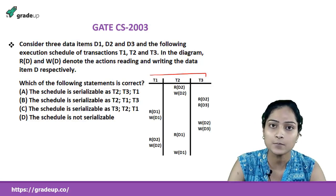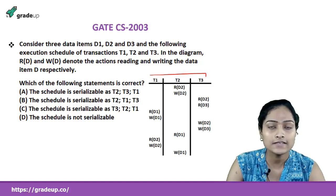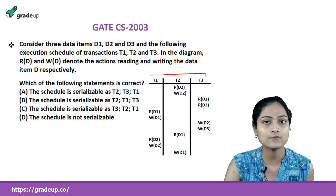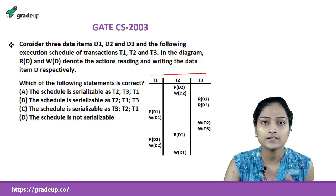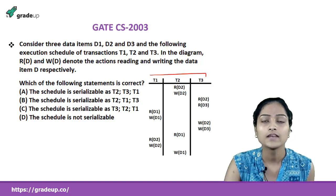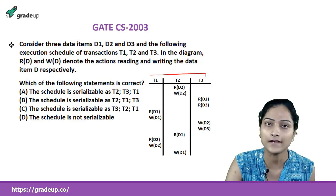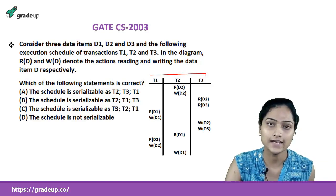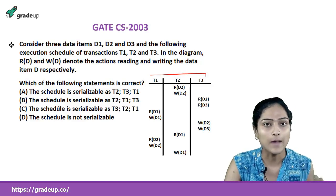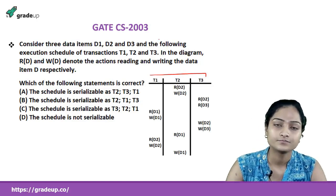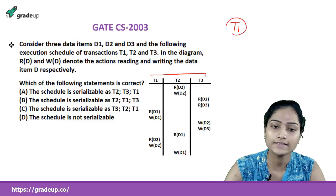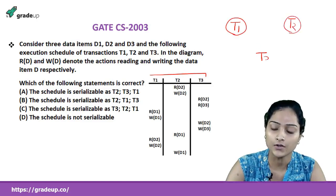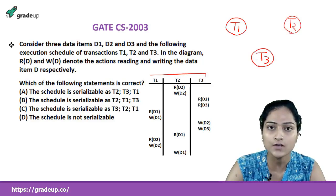We have two techniques to check serializability: conflict serializability and view serializability. It is easy to check conflict serializability — we just draw a precedence graph for the given schedule. To draw the precedence graph, first find the vertices, which are the transactions, then find edges between transactions based on conflict pairs. Let us check whether this schedule is serializable by drawing its precedence graph.